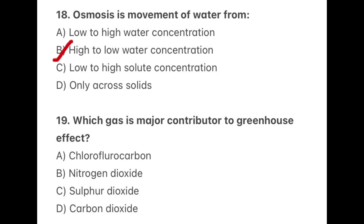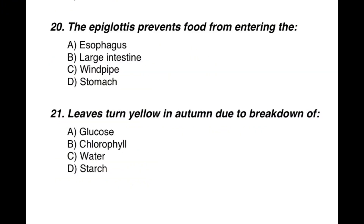Question 19: Which gas is the major contributor to the greenhouse effect? The correct option is D — carbon dioxide (CO₂). Question 20: The epiglottis prevents food from entering the — the correct option is C — windpipe.